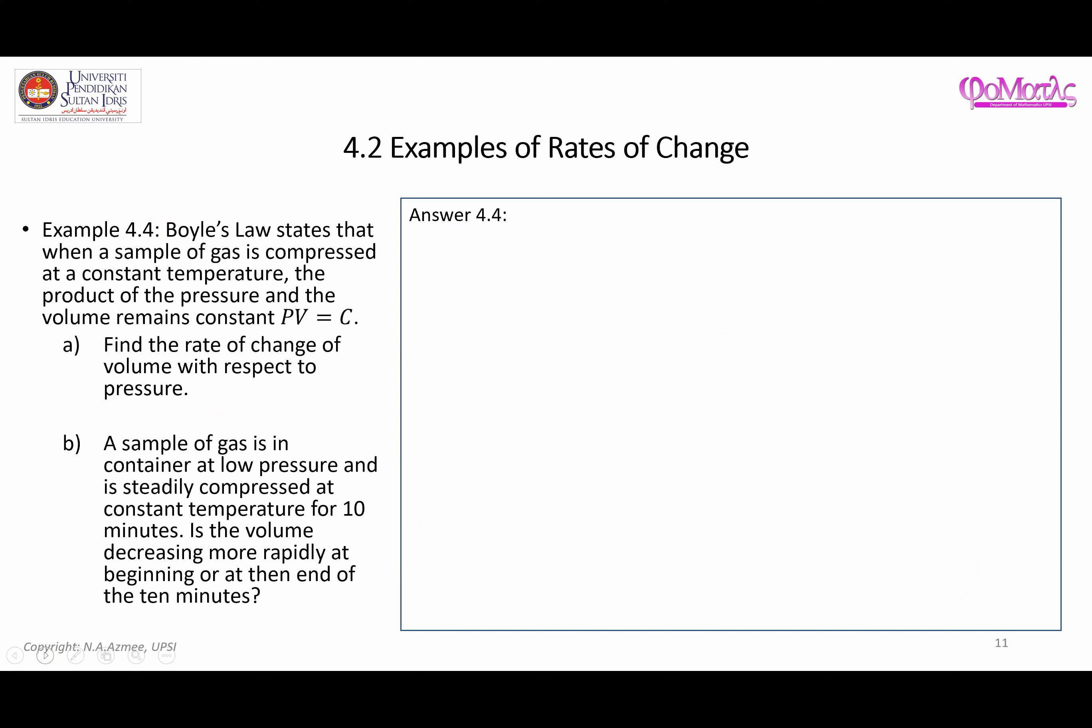Now according to Boyle's Law, it states that when a sample of a gas is compressed at a constant temperature, the product of the pressure and the volume remains constant. And that's why we have this equation here: PV = C. PV here is the product of pressure and volume, and C here is a constant.